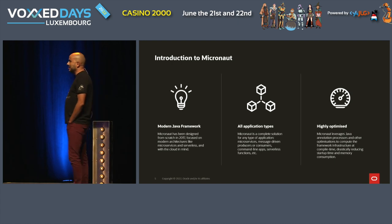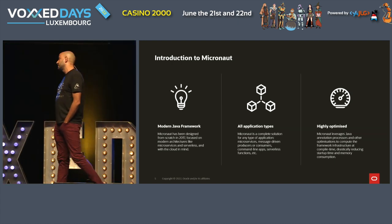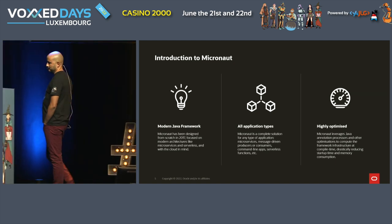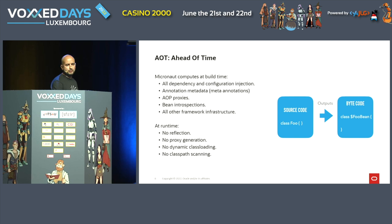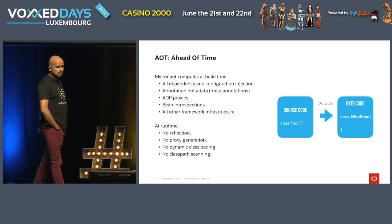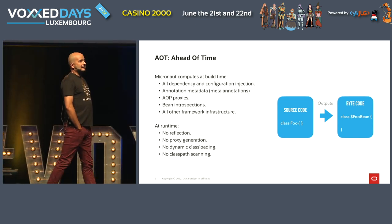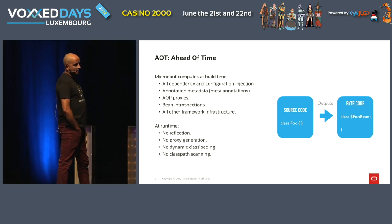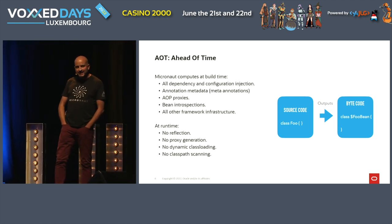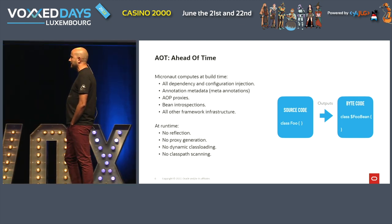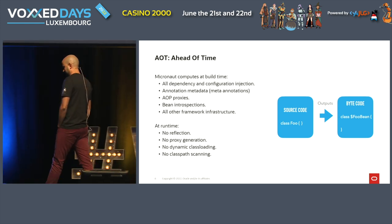How does Micronaut differentiate from other frameworks like Spring or Jakarta EE? The main difference is that we try to do as many things as possible at build time — an approach called AOT, ahead-of-time compilation. Unlike other frameworks where most of the magic happens at runtime, at Micronaut we do as much as we can during build time using a Java facility called the annotation processing API. It's a hook into the compiler process where we take your source code and generate bytecode during build time. We mostly generate bytecode, sometimes source code as well.